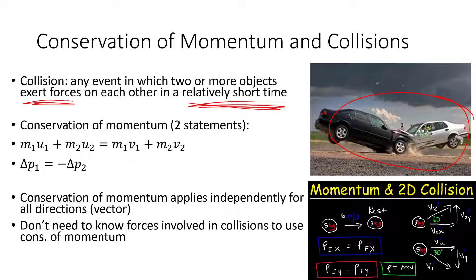When we have a collision, we can write our statements of conservation of momentum. The change in momentum for one object is equal to the negative change in momentum for the other object. Another way to say that is: the total momentum at the beginning equals the total momentum at the end. So p1-initial plus p2-initial equals p1-final plus p2-final.